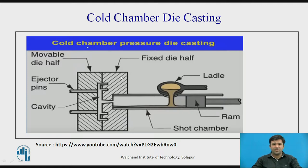Now looking at the diagram: this is the fixed die half, shown with its cross-section. This is the movable die half. The molten metal is melted elsewhere, brought near the machine, and then poured in. The molten metal enters the chamber and is then pushed with the help of a ram.